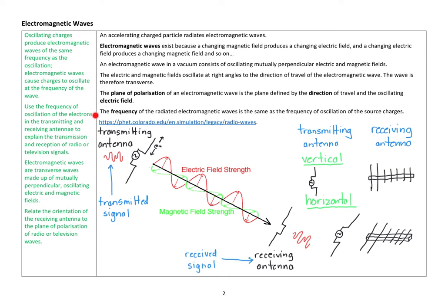Use the frequency of oscillation of the electrons in the transmitting and receiving antenna to explain the transmission and reception of radio or television signals. Electromagnetic waves are transverse waves made up of mutually perpendicular oscillating electric and magnetic fields. We need to relate the orientation of the receiving antenna to the plane of polarisation of radio or television waves.